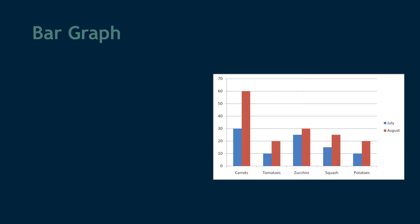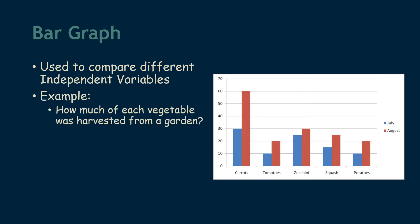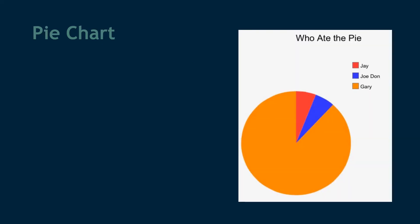Another type of graph that you may have seen before is called a bar graph. A bar graph is used to compare different independent variables in relation to each other. In this case we can see how much of each vegetable was harvested from a garden. We have a different set of bars for different months — the blue bars show how much of each vegetable was harvested in July, and the red bars show how much was harvested in August.